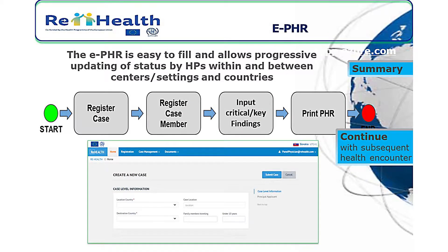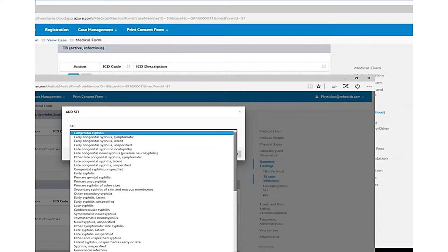The electronic personal health record is quite simple software that allows progressive updating of status. For example, if someone arrives at a landing point and has a two-to-three minute first assessment, the major conditions are recorded. Then when the person is transferred to another place or another country, you can update the information and also give the records to the migrants. It is IHR and ICD compliant, and uses a standard database format.